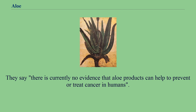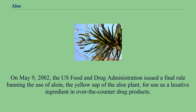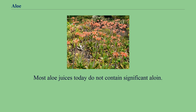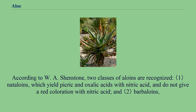On May 9, 2002, the U.S. Food and Drug Administration issued a final rule banning the use of aloe laxative, the yellow sap of the aloe plant, as a laxative ingredient in over-the-counter drug products. Most aloe juices today do not contain significant aloin. According to W.A. Shenstone, two classes of aloeins are recognized: nataloins, which yield picric and oxalic acids with nitric acid and do not give a red coloration with nitric acid.